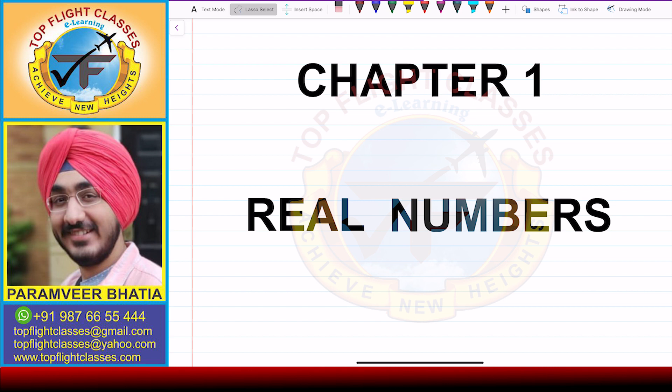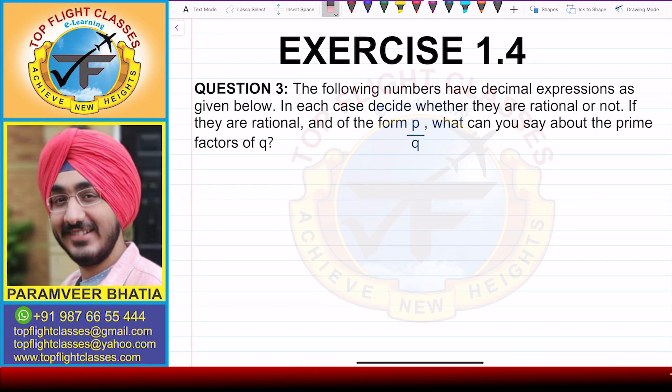Hey guys, welcome to my channel Top Flight Classes. In this video we'll discuss question number three of Exercise 1.4. The question says: the following numbers have decimal expressions as given below. In each case, decide whether they are rational or not. If they are rational and of the form p by q, what can you say about the prime factors of q?